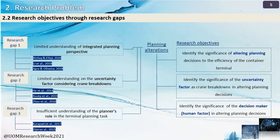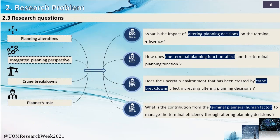After evaluating all the studies considered under the literature review, we found three main research gaps: limited understanding of integrated planning perspective, uncertainty, and crane breakdown. We found that planning operations can connect these research gaps. We developed four research questions: to understand the relationship between altering planning distance and terminal efficiency, to identify the behavior of planning functions one over another, to understand the impact of crane breakdowns, and to understand the human factor in planning operations.